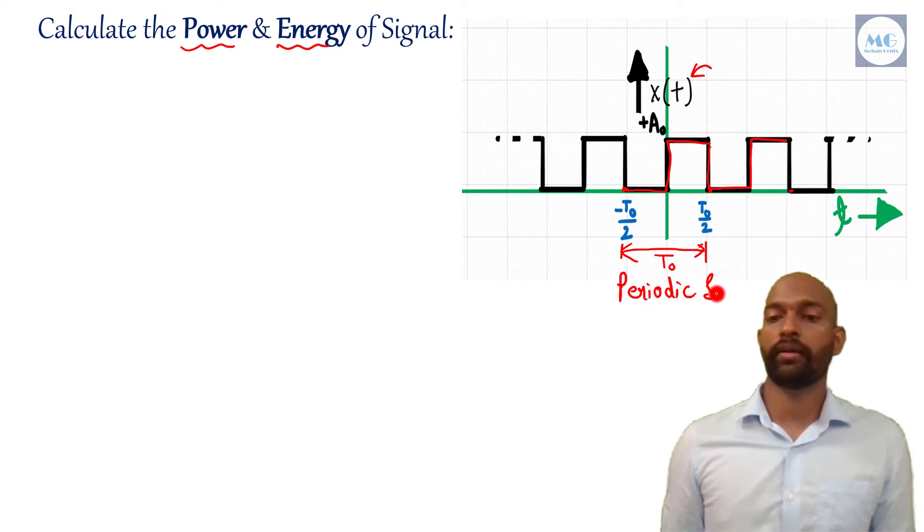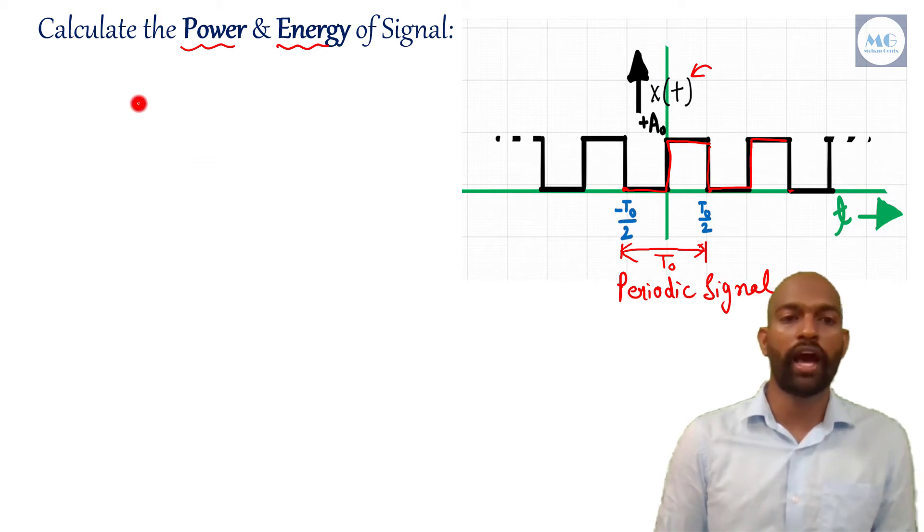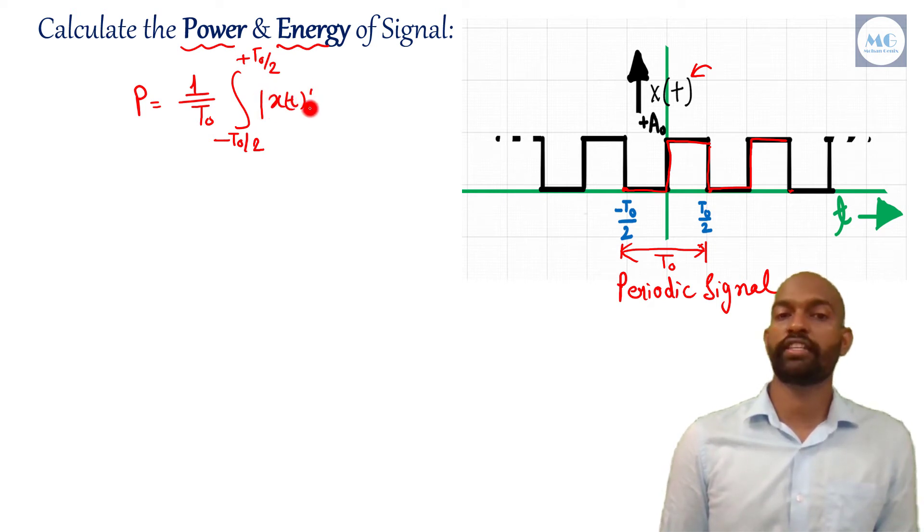So to calculate power of a periodic signal, the formula is p is equal to 1 by t0, I already told you all this formula in my previous lecture. So p is equal to 1 by t0 from minus t0 by 2 to plus t0 by 2, xt mod of xt square dt. So this is the formula.